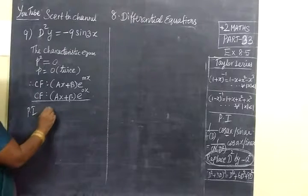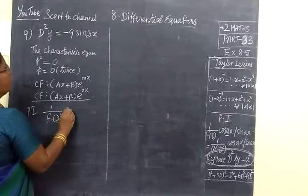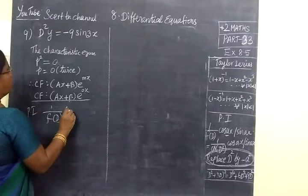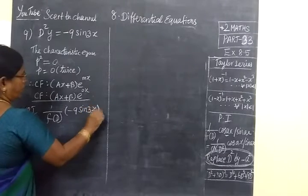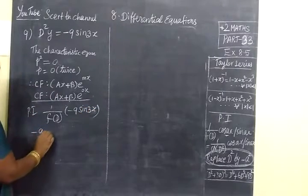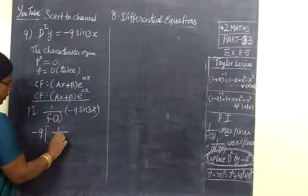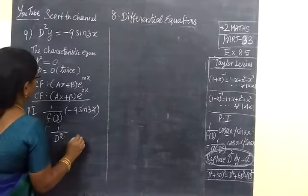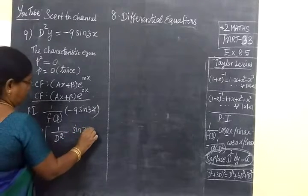Now we find the particular integral using the formula 1/f(D) applied to the function, which is -sin3x. Taking the minus sign outside, we have 1/f(D), where D² operates on sin3x.